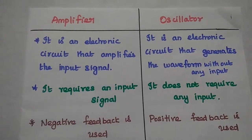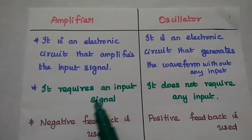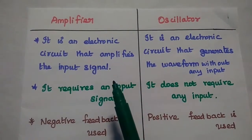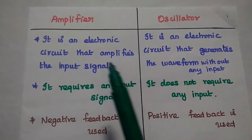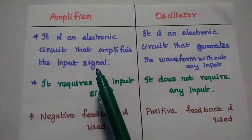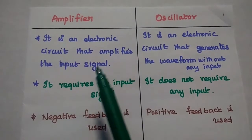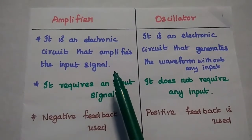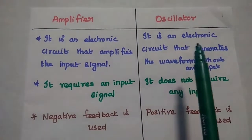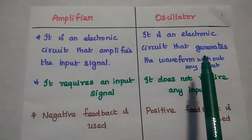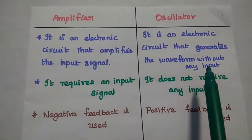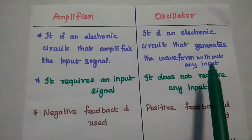Dear students, now we are going to discuss the comparison of amplifier and oscillator. An amplifier is an electronic circuit that amplifies the input signal. An oscillator is an electronic circuit that generates the waveform without any input signals.